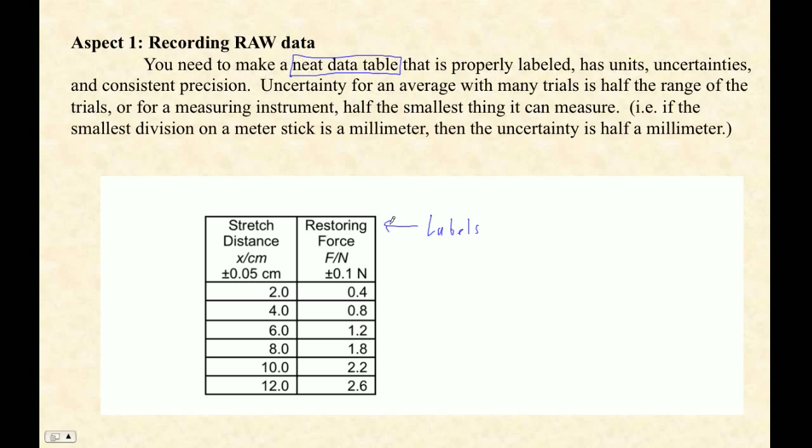Now neat data tables have labels. So that's what you record. Here it's restoring force, here it's stretch distance. And IB does this - they want a symbol and they want the units. So this is force in newtons, x the distance in centimeters.